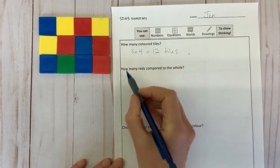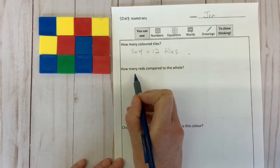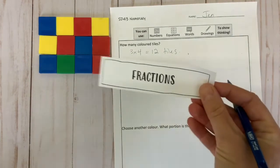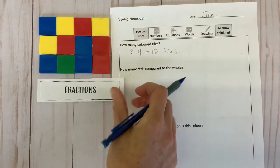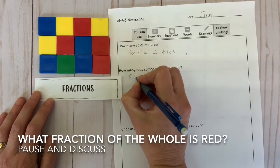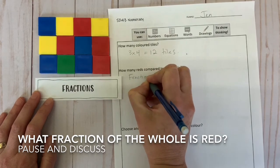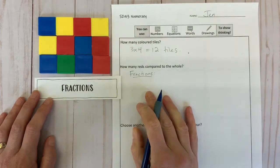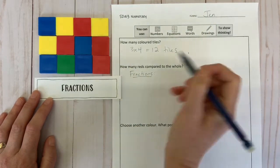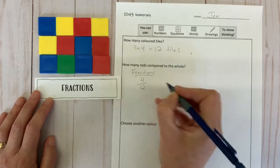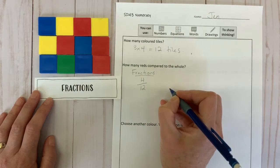The next step is to show how many red parts compared to the whole. I think I'm going to start with fractions to represent my thinking at first. What is the fraction of red tiles in this case? Pause the video and discuss. If you came up with four twelfths, then good for you. There are four reds out of the total 12 tiles.